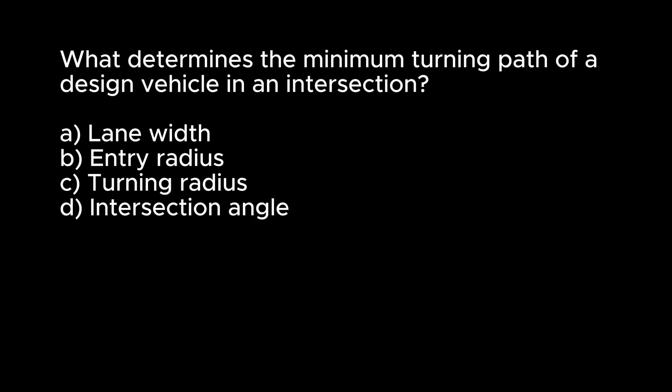What determines the minimum turning path of a design vehicle in an intersection? A. Lane width. B. Entry radius. C. Turning radius. D. Intersection angle. Answer: C. Turning radius.